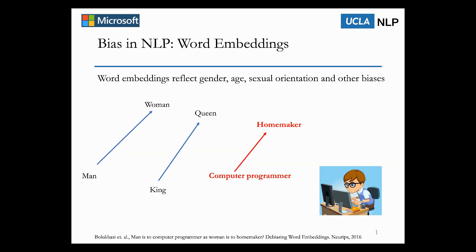We know that word embedding has become a fundamental technique in NLP. It maps words with similar semantics to close positions in the embedding space, and supports many downstream applications. However, recently, several studies report that embeddings reflect societal bias from the text they were trained on. For example, when finding word pairs that parallel to man versus woman to represent gender, the model not only identifies king to queen, but also computer programmer to homemaker.